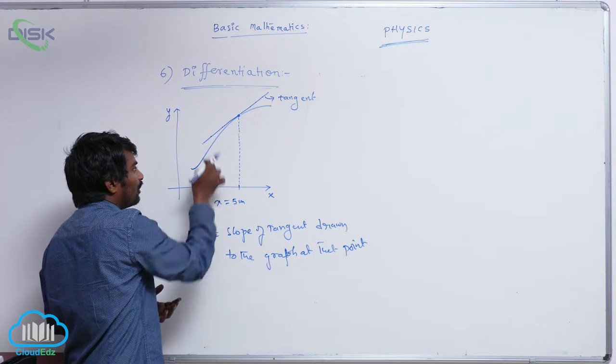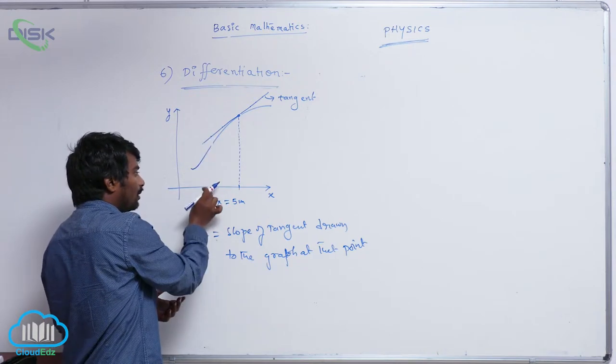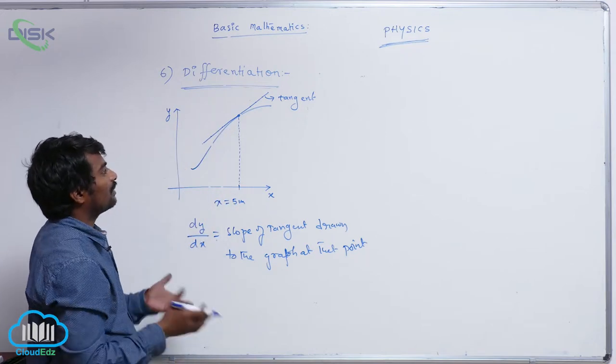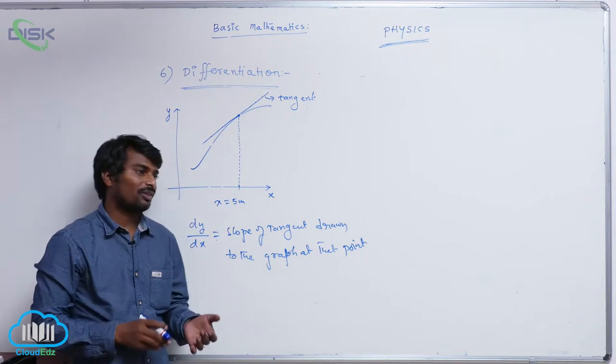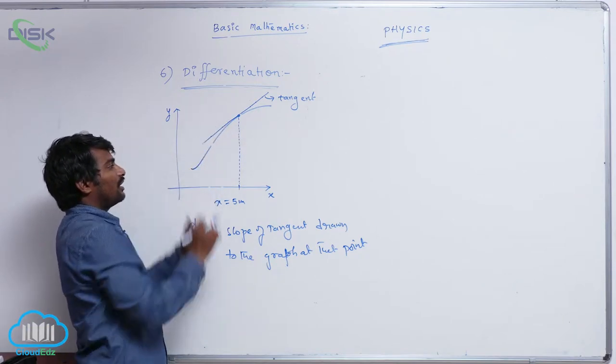So corresponding values of x1, y1, x2, y2 or x1, y1, x2, y2 you read and slope will be y2 minus y1 by x2 minus x1 or slope this tan theta value.